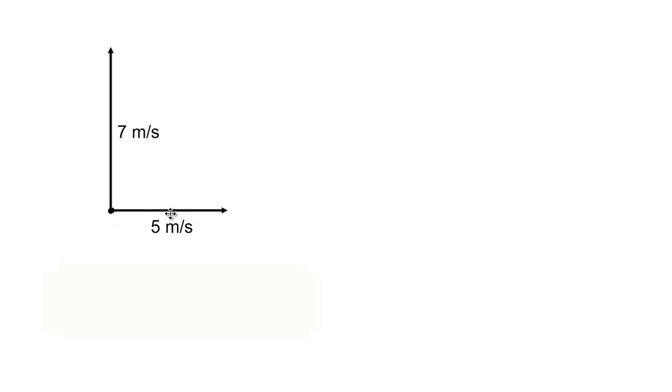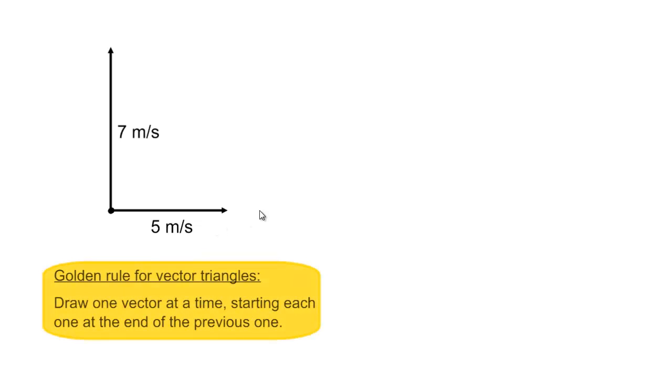Firstly, we need to construct a vector triangle. The golden rule of vector triangles is that we must draw one vector at a time, starting each one at the end of the previous one. We can choose to start with whichever vector we want. Let's start with the 5 metres per second vector.